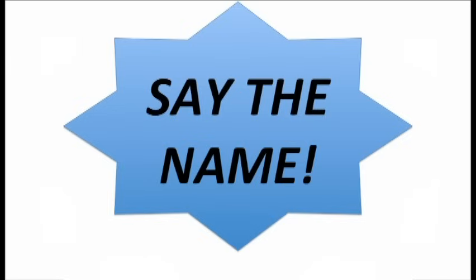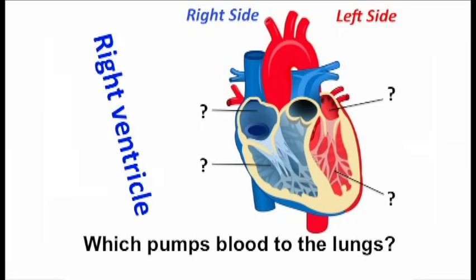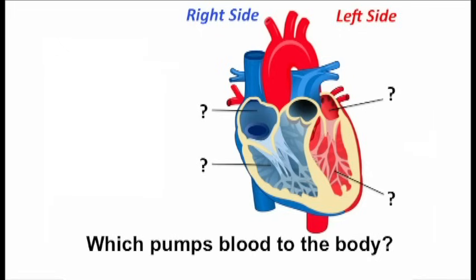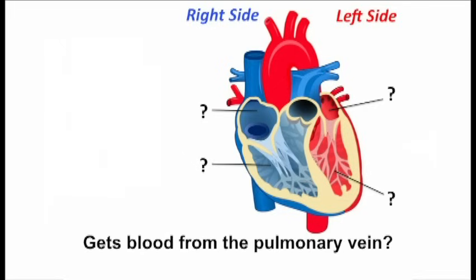Say the name. Which pumps blood to the lungs? Which pumps blood to the body? Gets blood from the Vena Cava. Gets blood from the pulmonary vein.